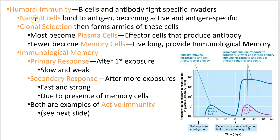We have naive B cells — those are just the B cells that are made in the bone marrow and do their maturation down there. Then they're all naive. Naive is like green; they don't know what they're doing. So they go to the lymph nodes, get exposed to antigen, bind to antigen, and become active — binding to an antigen that's shown to them by an antigen presenting cell.